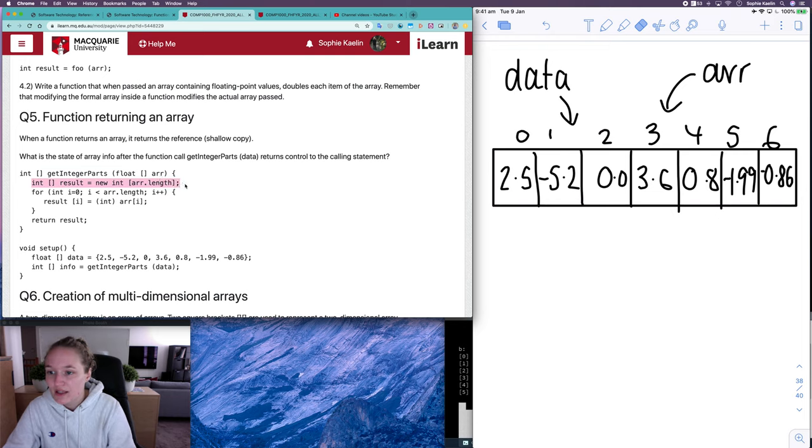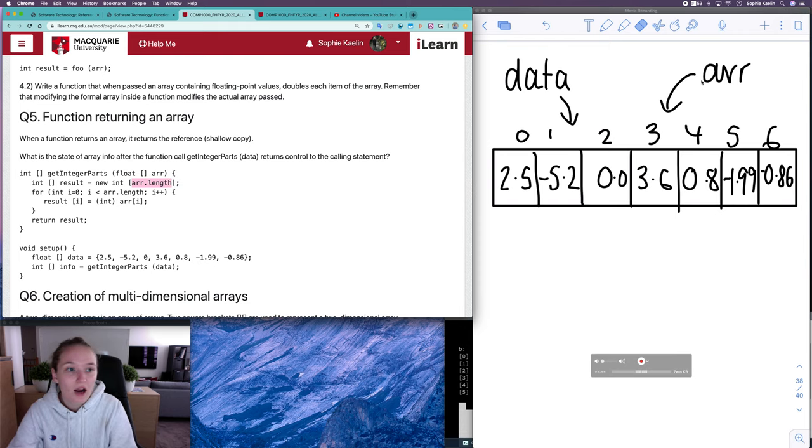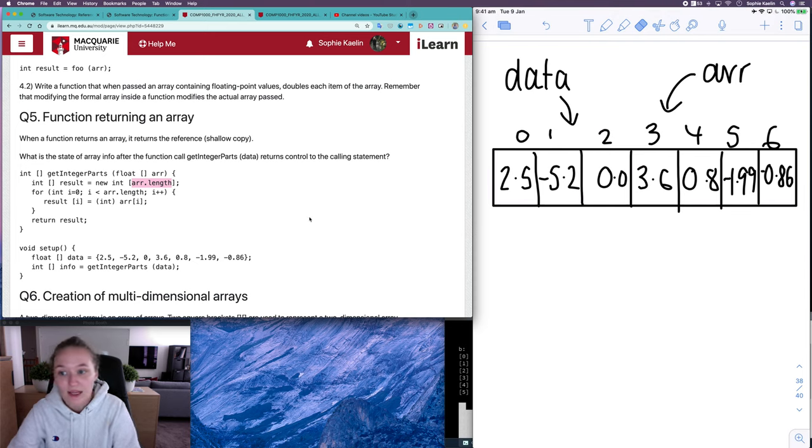So the first line here says that we have an integer array called result, which is a new integer array, so a new place in memory, and its length is R dot length and R is pointing to the same array as data, so its length will be seven.